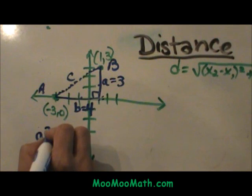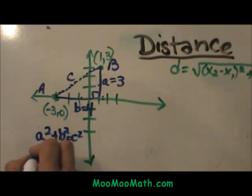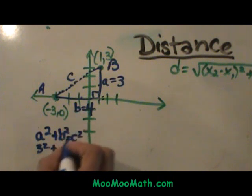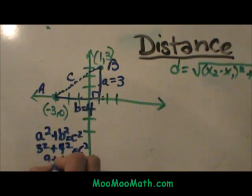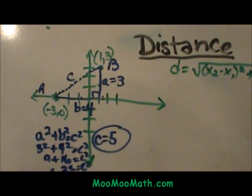A squared plus B squared equals C squared. Three squared plus B is four squared equals C squared. Nine plus sixteen is equal to twenty-five and the square root of twenty-five is five. So C is five.